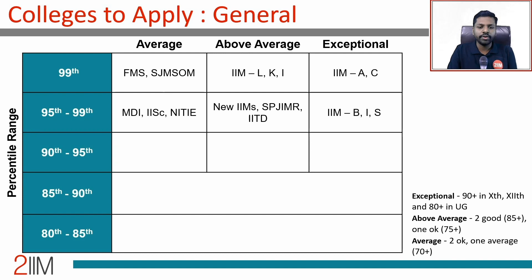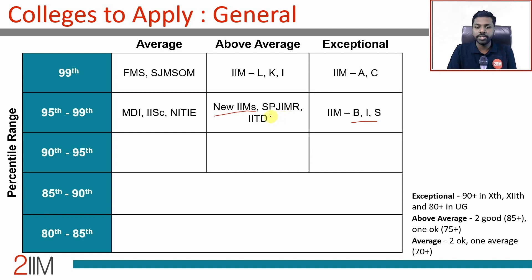The next percentile range is 95 to 99. Note that FMS applications may already be over. Among colleges in this range: people with exceptional academic scores can think about IIM Bangalore, Indore, and Shillong. People with above average scores can think about new IIMs, XLRI, SPGIMR — though SPGIMR applications may be over by November 23 — and IIT Delhi. Those with average academics and okayish sectional cutoffs can think about MDI, IESE Bangalore, and NITIE, with cutoffs around 96 to 97.